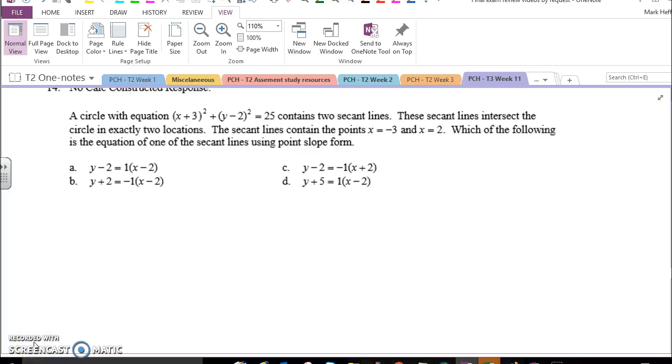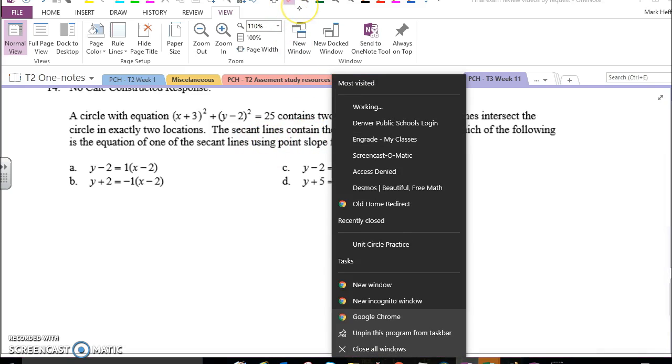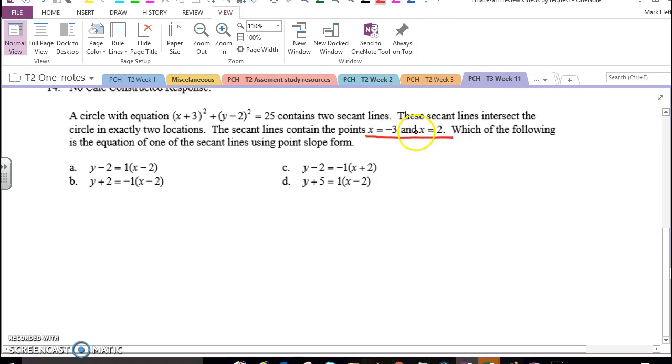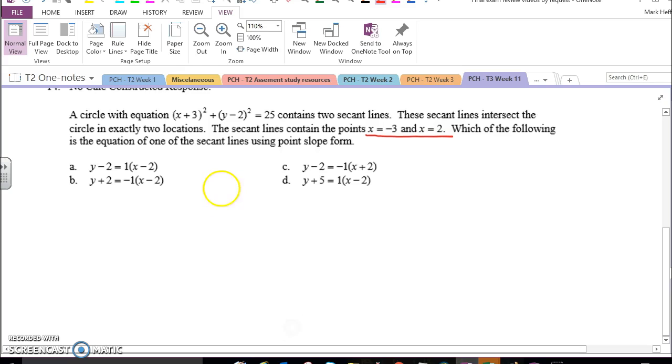You've been given the equation of the circle, you've been told that a secant line contains these two points, x equals negative 3 and x equals 2, and you've been asked for the equation of one of them.